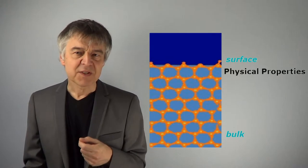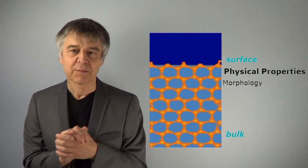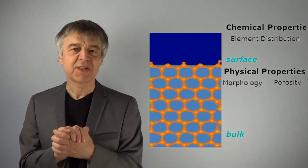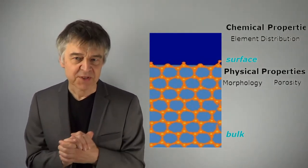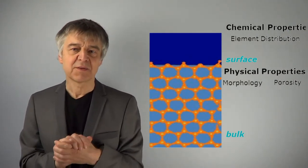Physical properties include morphology, structure, porosity, the number and the size of the pores, and the chemical properties include the chemical composition of the surface, the distribution of the elements and other chemical characteristics.